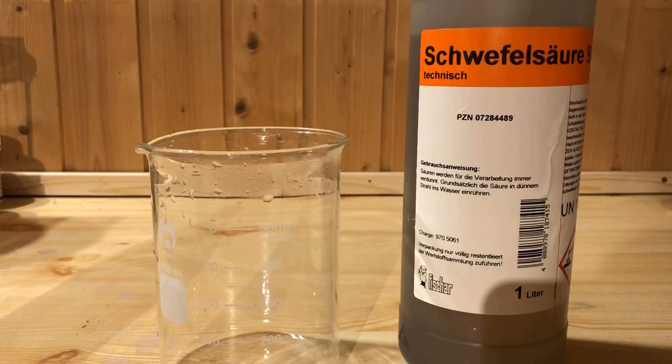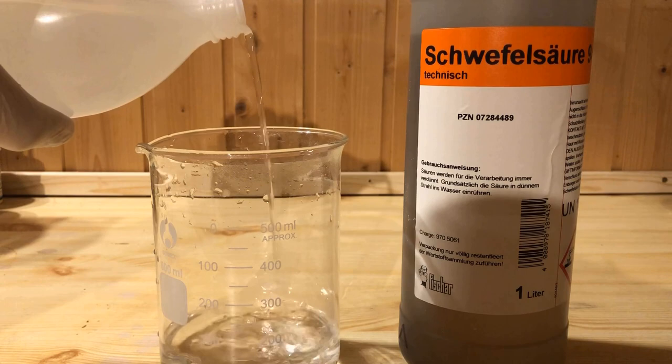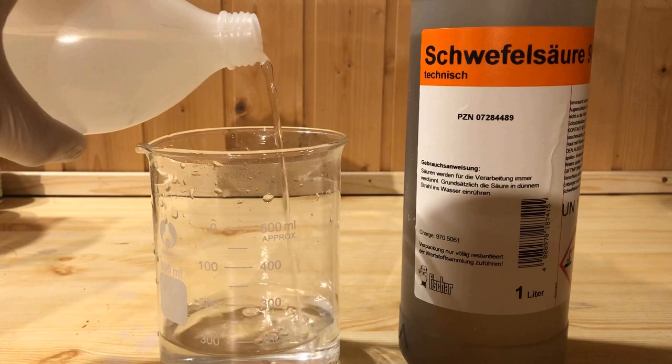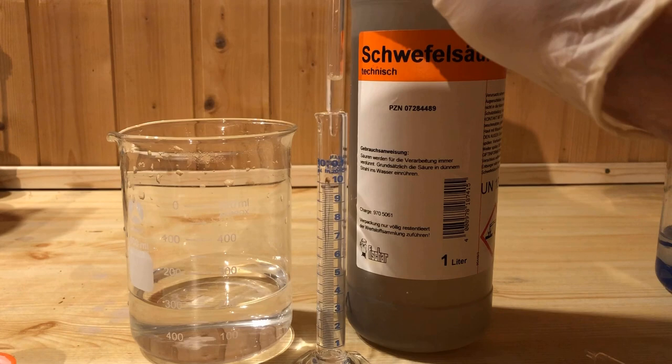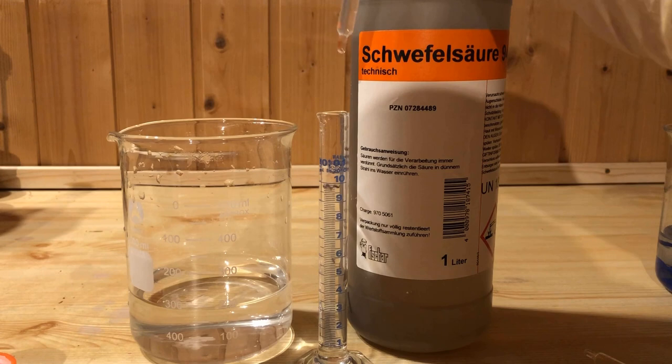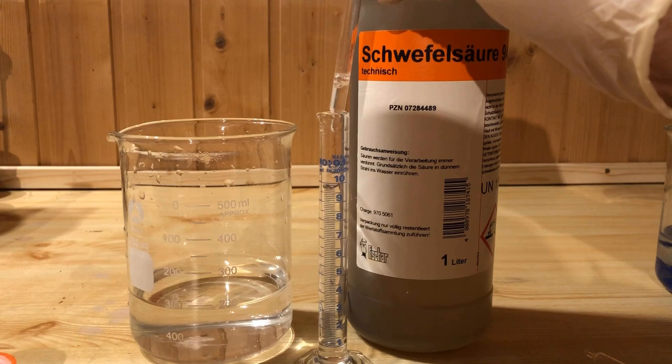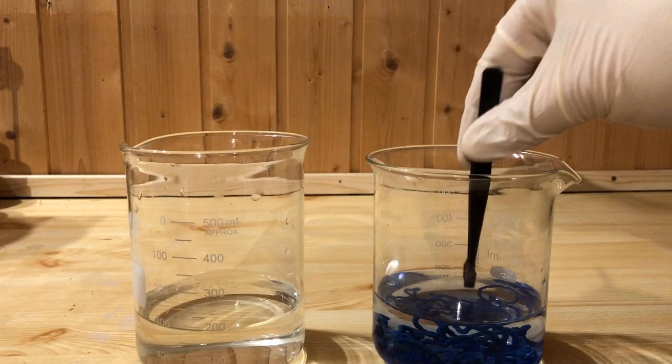In another fresh beaker, 200 ml of distilled water is added. Using a pipette in a graduated cylinder, 20 ml of concentrated sulfuric acid is measured out. After adding the concentrated sulfuric acid to the 200 ml of distilled water, the synthetic silk thread is put in. This is for decoppering and may take a while.